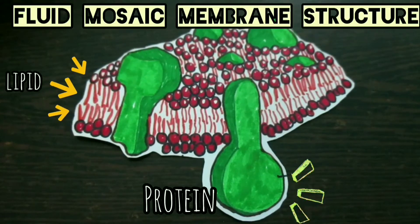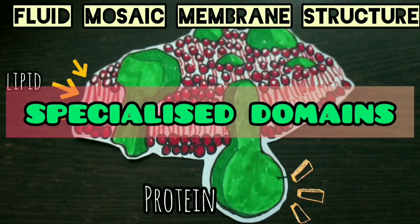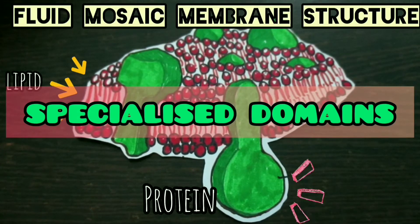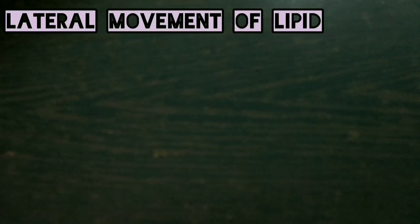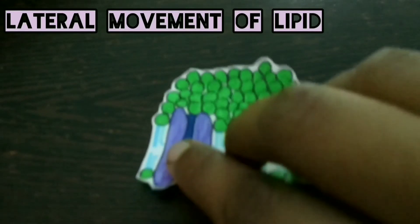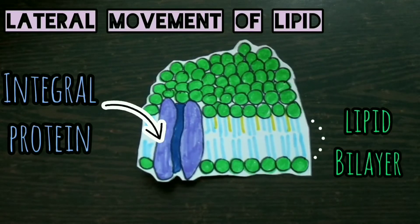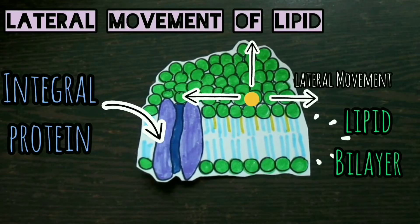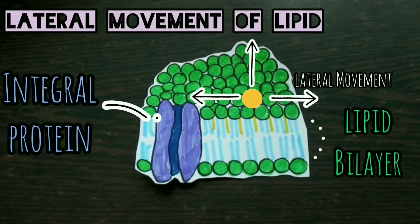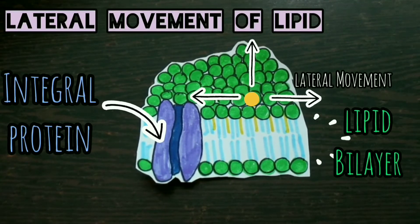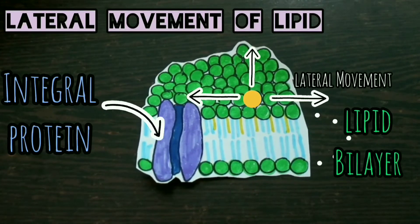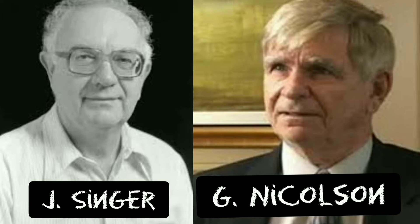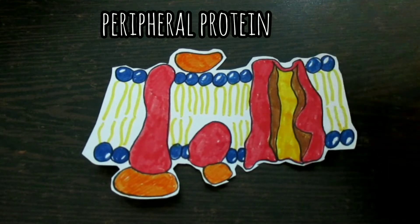The plasma membrane is composed of several specialized domains, and about these domains you will learn in our upcoming videos. One central feature of the fluid mosaic is that proteins are inserted into the fluid bilayers. Both proteins and lipids are able to diffuse laterally through the membrane. This lateral movement of membrane proteins was first shown directly by Larry Frye and Michael Ediden in 1970. Singer and Nicholson distinguished two classes of membrane-associated proteins, which they called peripheral and integral membrane proteins.